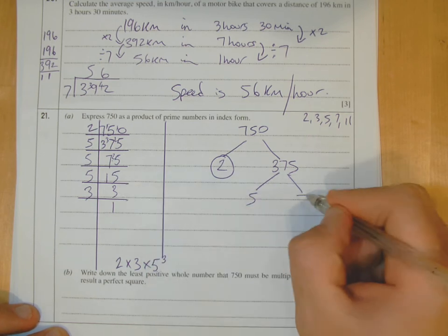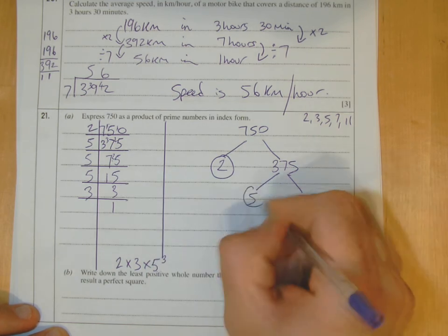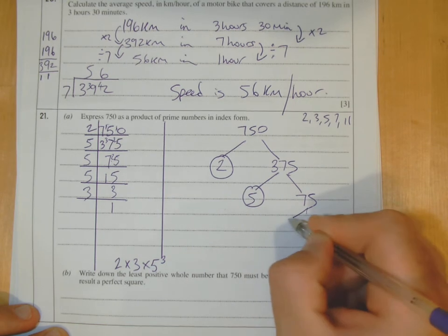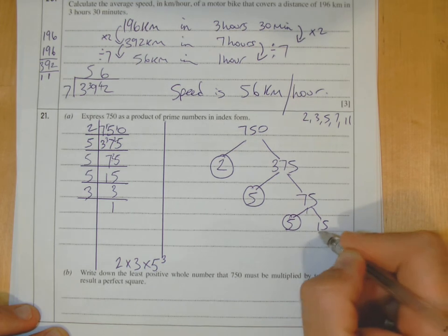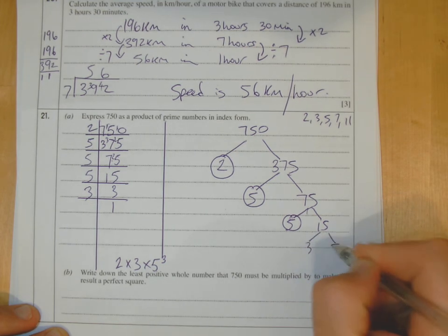As we worked out over here, 75 times 5. 5 is prime so we circle it. 75, well 5 goes into it 15 times. Circle that. 15 then: 3, 5.